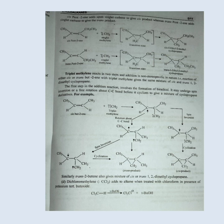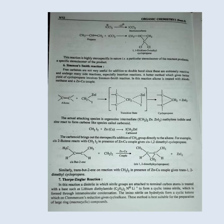Dichloromethylene adds to an alkene when treated with chloroform in the presence of potassium tert-butoxide. This reaction is highly stereospecific in nature, i.e., a particular stereoisomer of the reactant produces a specific stereoisomer of the product.